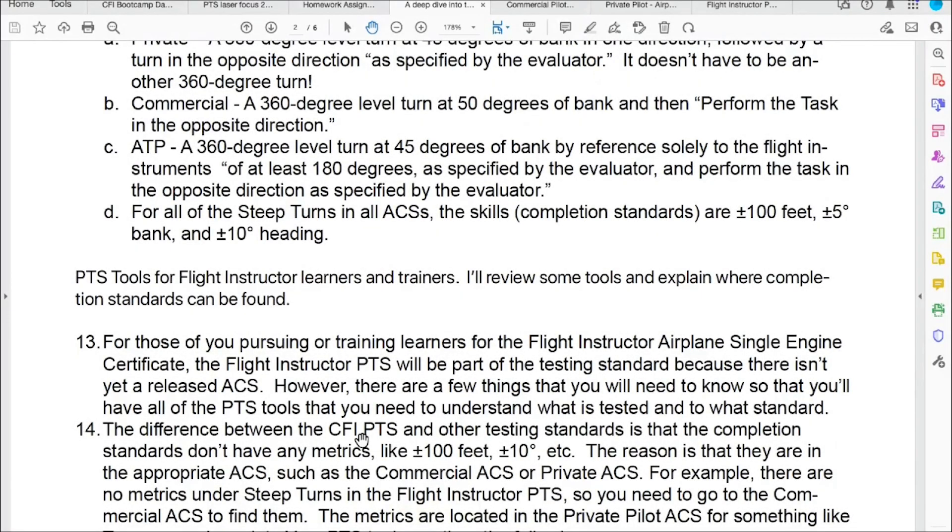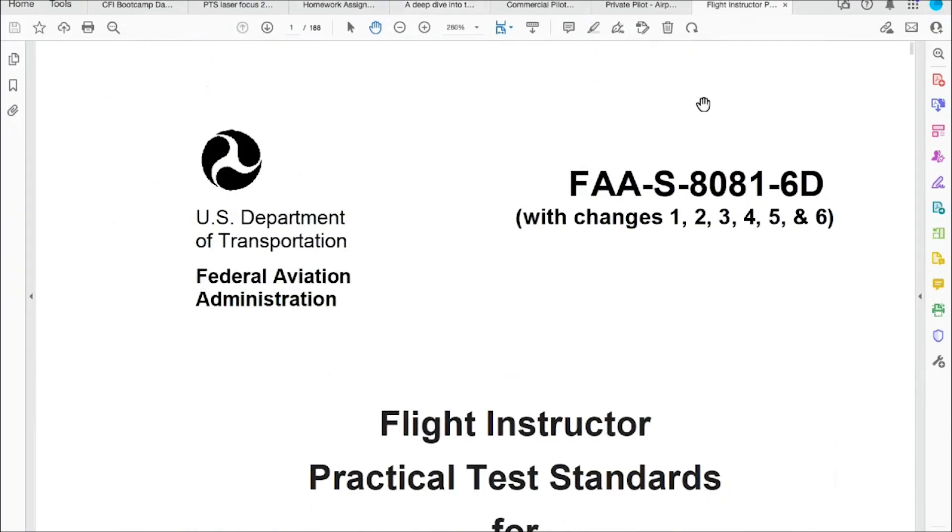The difference between the CFI PTS and other testing standards is that the completion standards don't have any metrics. They don't have anything like plus or minus 100 feet, plus or minus whatever. So let me show you that. I have the PTS for Flight Instructor pulled up here.